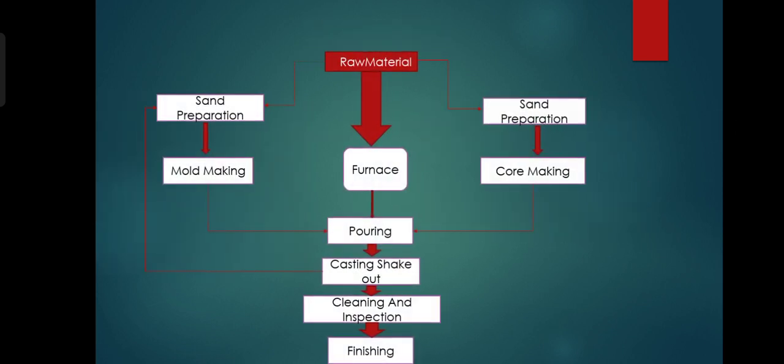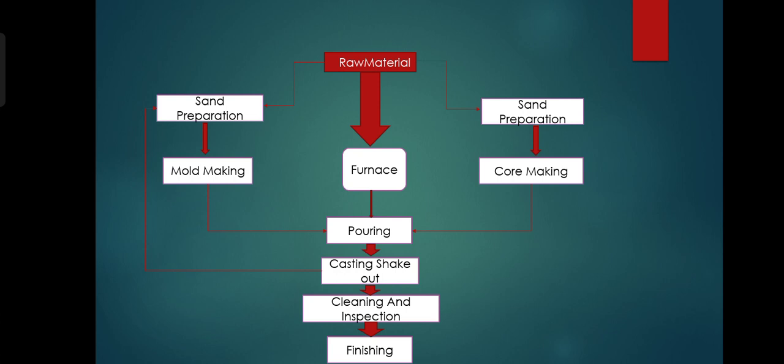This is the flowchart of manufacturing of bevel gear. In this flowchart, which materials are used, which furnace is used, and these are the manufacturing processes: pouring, casting, shake-out, cleaning and inspection, finishing.